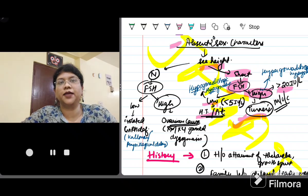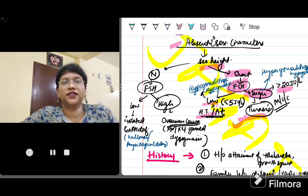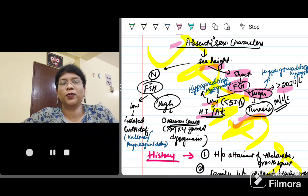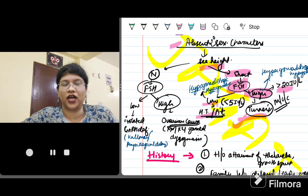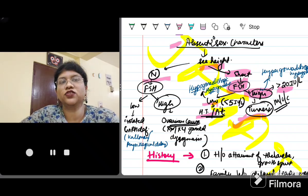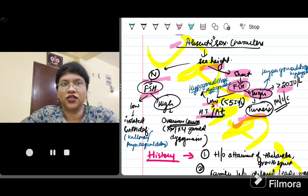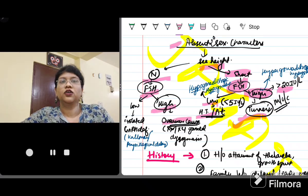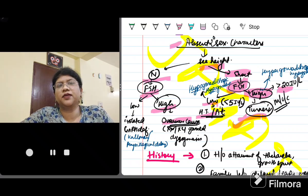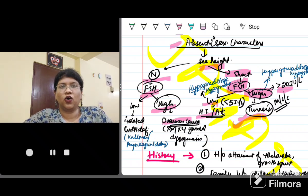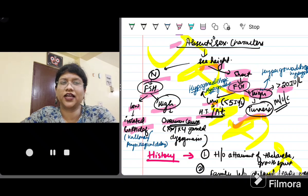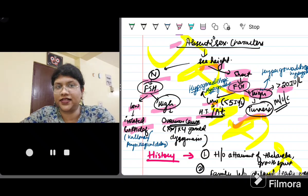Suppose FSH came out to be low, that means the problem lies somewhere in the hypothalamus or in the pituitary. Low means less than 5 international units per liter. So there you will go for the causes of hypogonadotropic hypogonadism. If her height is normal, then you will do the FSH. If it is high, then it may be ovarian causes or gonadal causes apart from Turner's syndrome, like XX or XY gonadal dysgenesis. If her FSH is low, then it can be isolated GnRH deficiency or physiological delay or Kallmann syndrome.